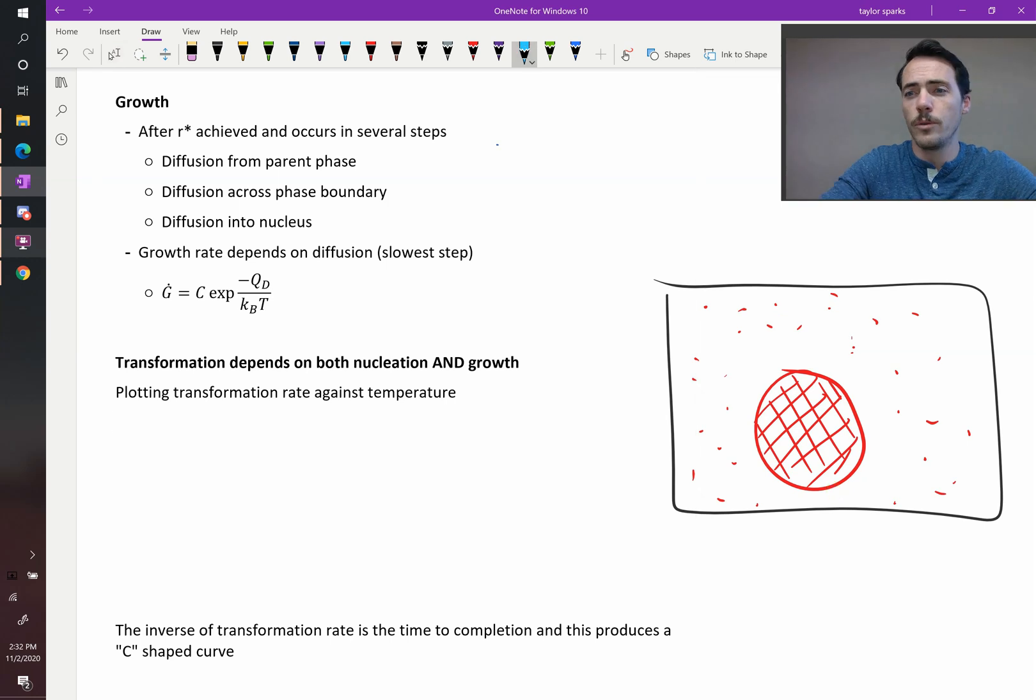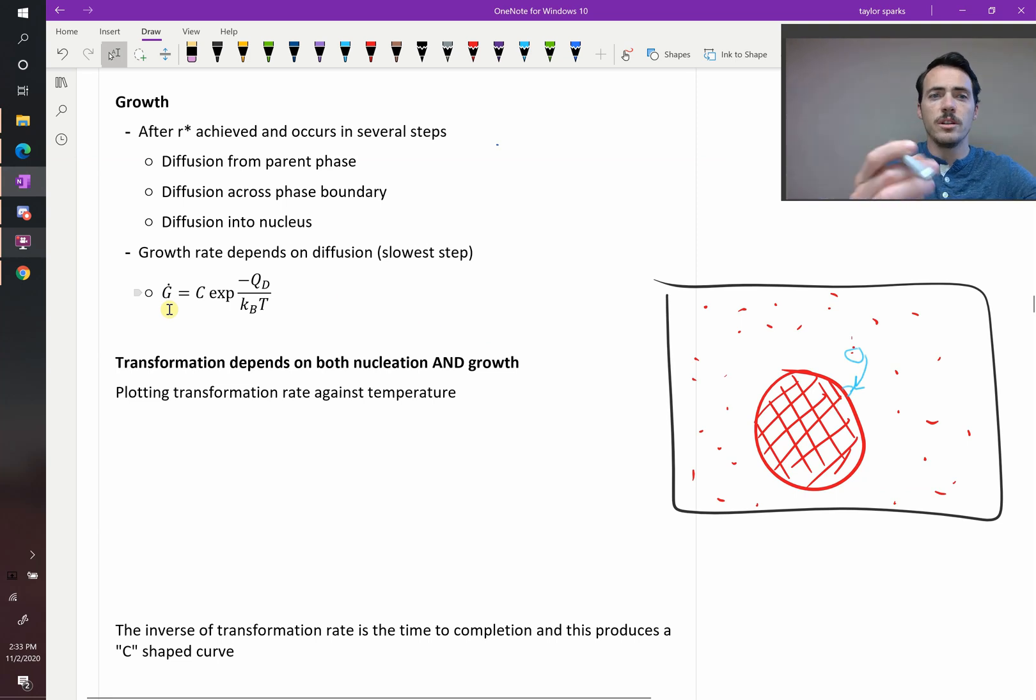The rate of growth depends on a few things. For some given atom that's in the parent phase, it has to diffuse out of the parent phase, break that bond and diffuse out. It has to cross this phase boundary between the two materials and then attach itself in the correct position of the new phase. So all of those things could end up with a limiting step which is going to be diffusion based, and therefore your rate of growth G dot is going to be Arrhenius style where you have some constant C but the activation energy is going to be your activation energy for diffusion.